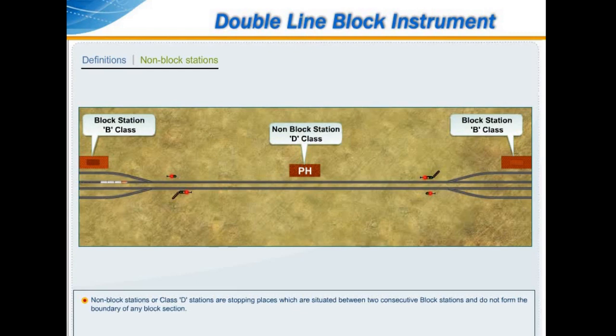Non-block stations or Class D stations are stopping places which are situated between two consecutive block stations and do not form the boundary of any block section.